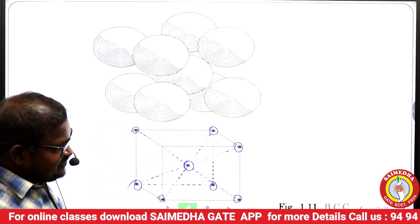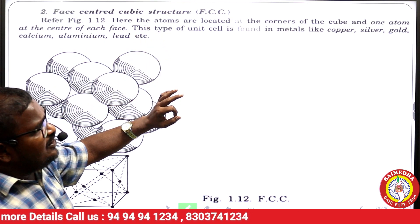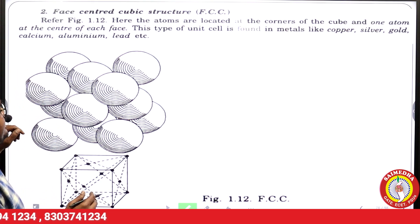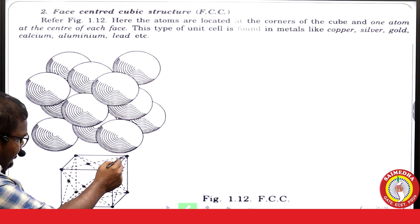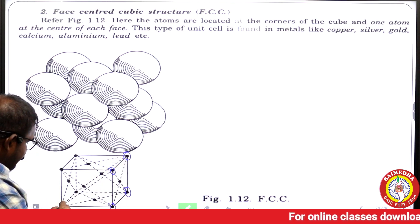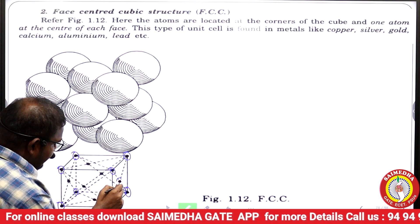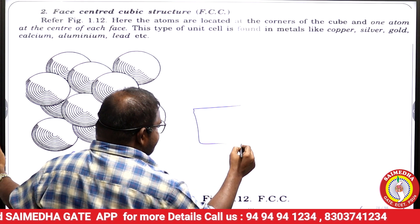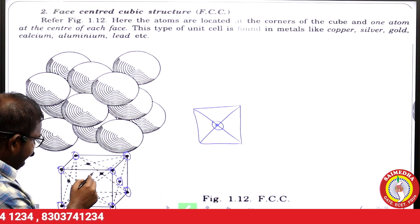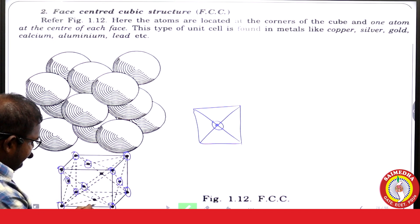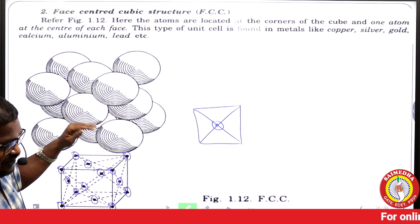Next is face-centered cubic (FCC) structure. Here the atoms are located at the corners of the cube, and one atom is located at the center of each face. So at all corners we have atoms, and at each face center we also have an atom. We will calculate how many atoms are present later.